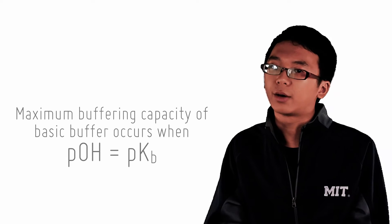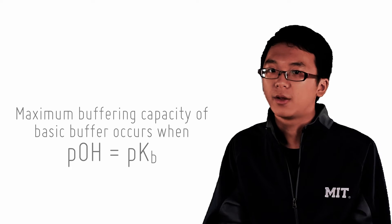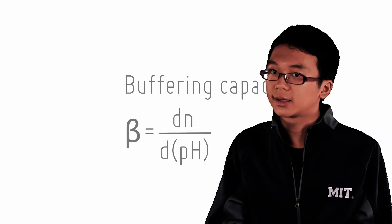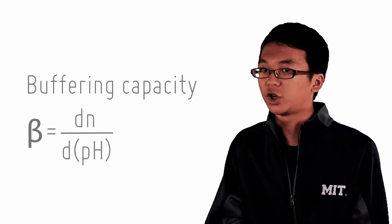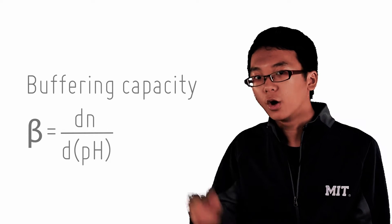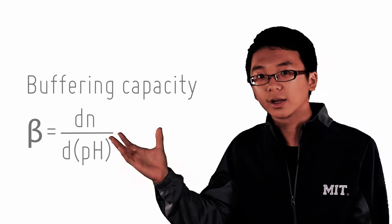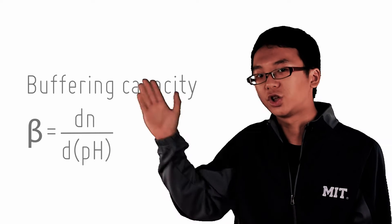Now, how strong then is the buffer that we make resistant to pH changes? Formally, buffer capacity is defined as beta equals to a change in moles of added base over, or more specifically the hydroxide ions over the change in pH.